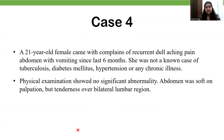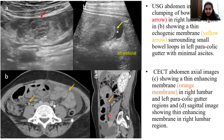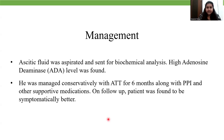Case 4: A 21-year-old female came with complaints of recurrent colicky pain abdomen and vomiting since the last 6 months. She was not a known case of any chronic illness, and physical examination showed no significant abnormality but on palpation there was tenderness over bilateral lumbar regions. Ultrasound showed clumping of the bowel loops in the right lumbar region and a membrane encasing the small bowel loops with surrounding interloop fluid. CECT image showed a thin membrane surrounding the bowel loops in the right lumbar and left paracolic gutter. Sagittal image showed a thin enhancing membrane in the right lumbar region. Ascitic fluid was aspirated for biochemical analysis and high adenosine deaminase level was found. The patient was managed conservatively with ATT for 6 months along with other medications and was found to be symptomatically better on follow-up.